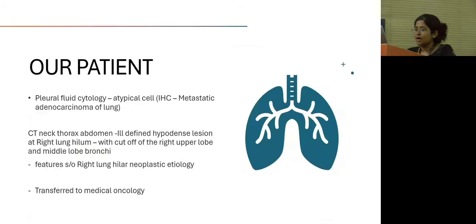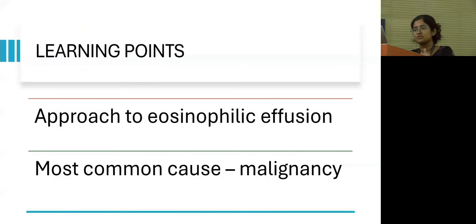So coming back to our patient, pleural fluid cytology was sent for, which showed atypical cells and IHC was suggestive of metastatic adenocarcinoma of the lung. CT neck thorax abdomen was showing ill-defined hypodense lesion in the right lung hilum with features of metastasis and spreading around the trachea as well. So the patient has been transferred on to medical oncology and she's undergoing treatment and therapy there. We just wanted to highlight the learning points: approach to an eosinophilic effusion and the most common cause of eosinophilic effusion is malignancy.